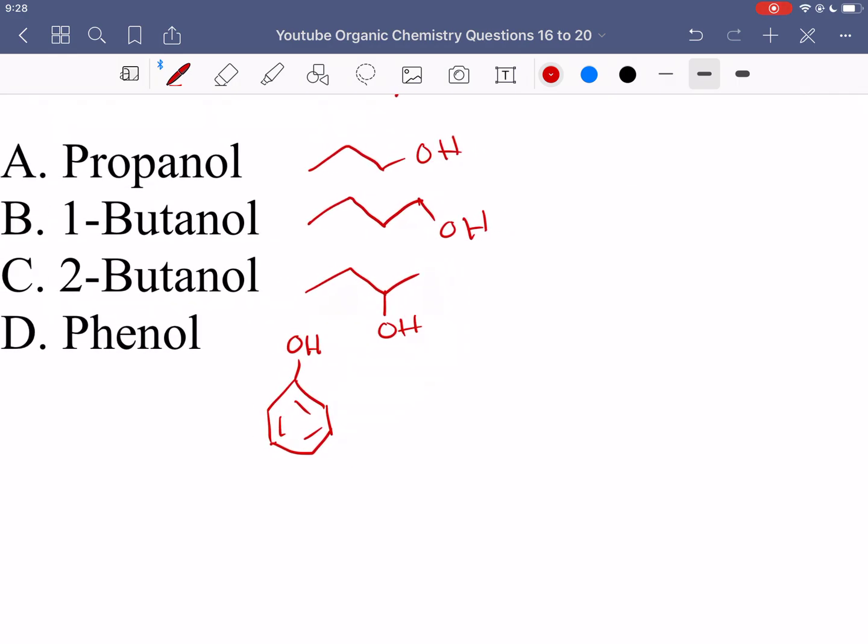So like if I had propanol, it would look like this if it's deprotonated. But the thing is, this conjugate base that we formed on the right, it is pretty strong as a base, which means that that O- does want to go and grab another proton to go back to where it's the alcohol on the left.